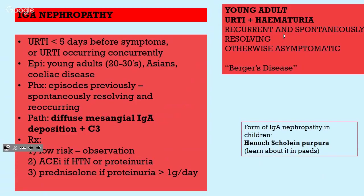IgA nephropathy is the other blood-in-urine condition. Hematuria occurs within a few days of URTI symptoms — they have the URTI and hematuria at the same time, and every time they get a URTI they pee blood, which then resolves. It's generally in young adults, Asians, and has a relationship to celiac disease. In EMQs it usually mentions previous episodes and family history. PATH: diffuse mesangial IgA deposition and complement 3. Management is observation; if severe, manage hypertension and add steroids. HSP is just IgA occurring in children — similar picture with a rash on the legs and buttocks and abdominal pain.